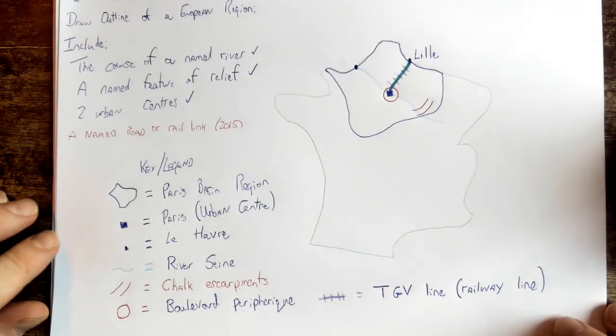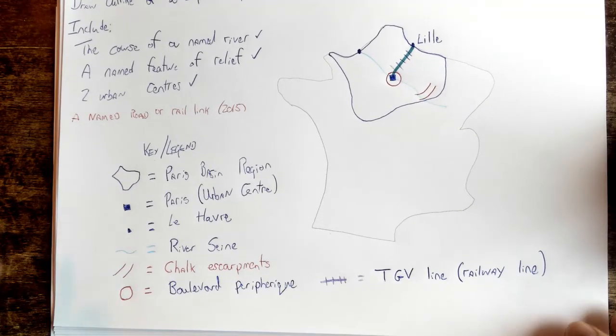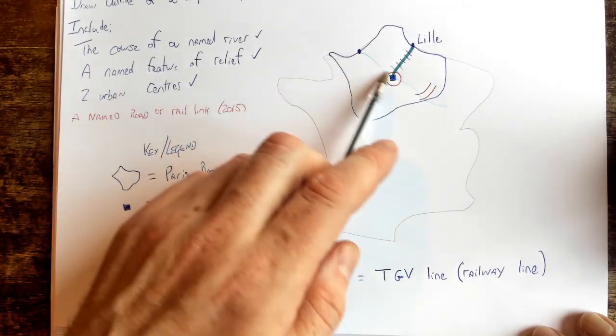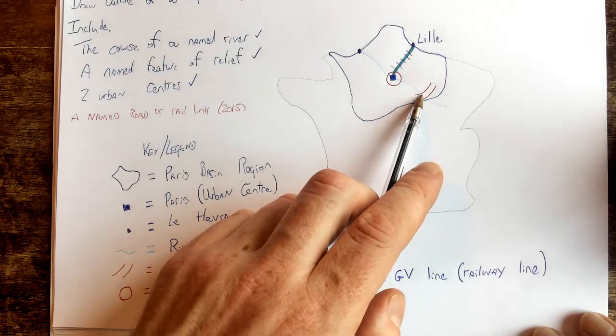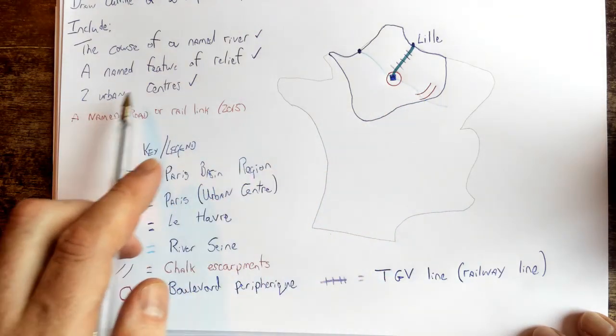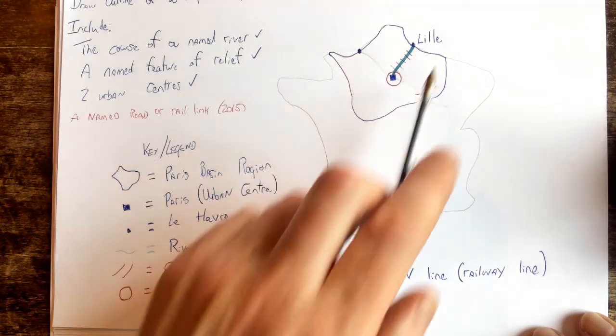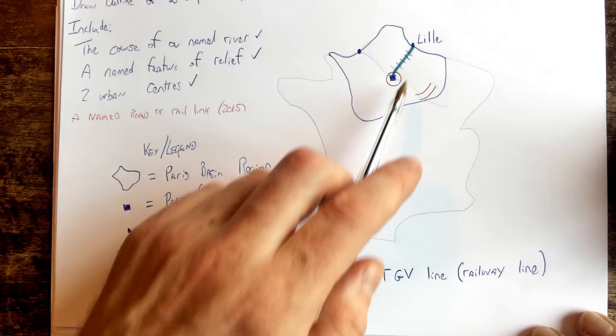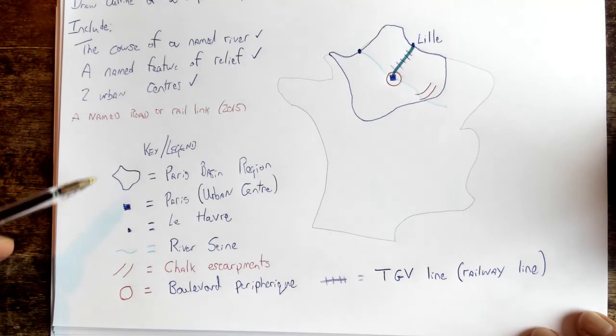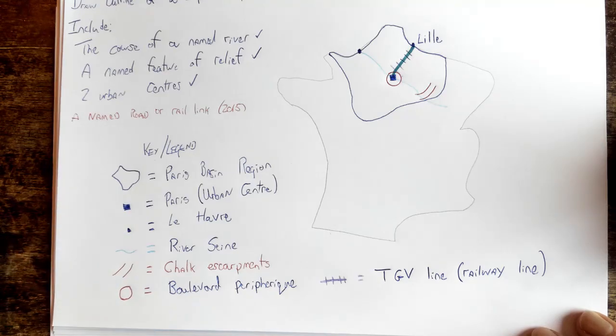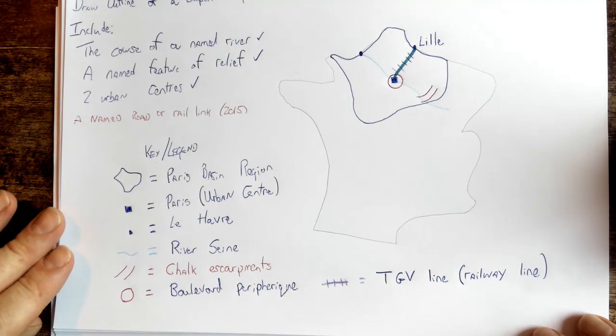Okay, so there you have it guys, this is how we do our sketch map of the Paris Basin. The course of a named river, the Seine. The named feature of relief, the chalk escarpments. Two urban centers, and I put in Paris and Lille as another one. Named road or rail link, the Boulevard Périphérique, or you can include the TGV to Lille. As you can see, for each of them I've given the symbol, and that's enough there to get yourself full marks on this question.